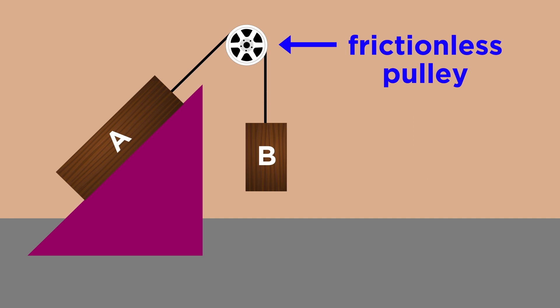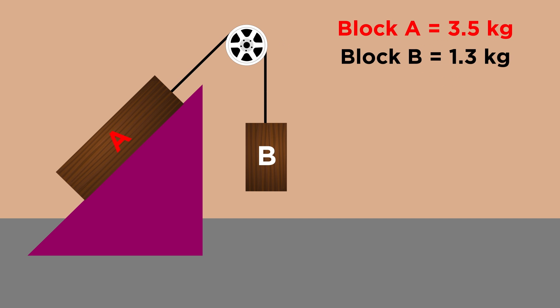The finished product consists of a string connecting two blocks via a frictionless pulley. 3.5 kilogram block A rests on a ramp, while 1.3 kilogram block B hangs straight down from the pulley.